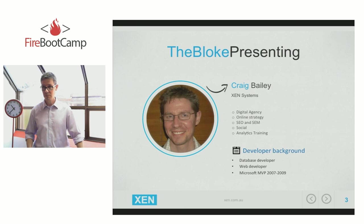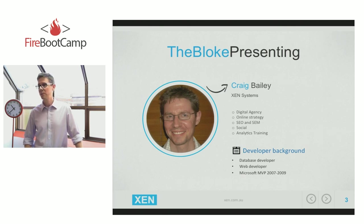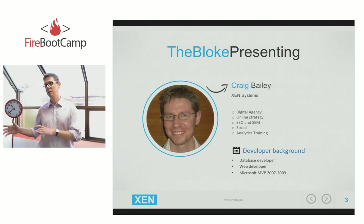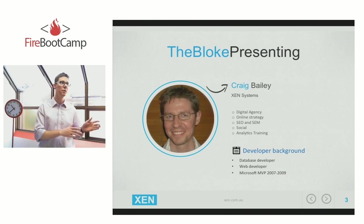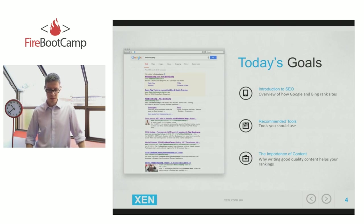Just a little bit about me. My name is Craig Bailey. I run a company called Zen Systems and we're a digital agency. We're small and we look after SEO and online strategy for clients, and I do a fair bit of analytics training as well. My background is actually as a developer — I was a developer for over 20 years, a database developer and then a web developer. I was a Microsoft MVP from 2007 to 2009, and after that I moved from developing to promoting — the online marketing side of sites.